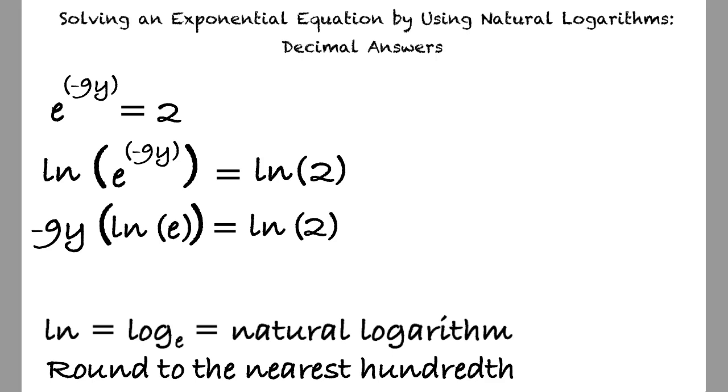Since the natural logarithm of e is 1, can we rewrite this equation as negative 9y equals the natural log of 2 to further isolate y? Exactly. This yields negative 9y equals ln of 2.